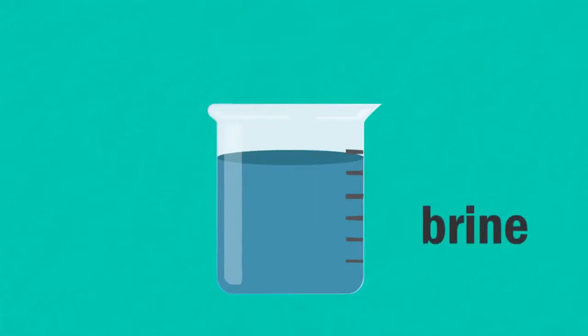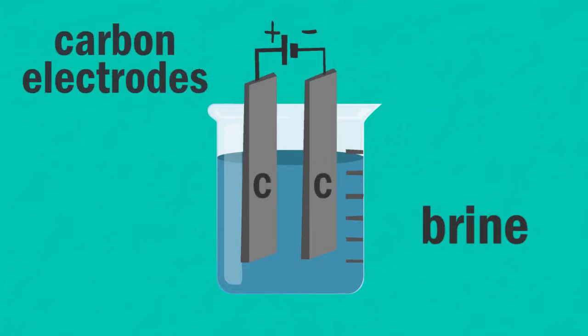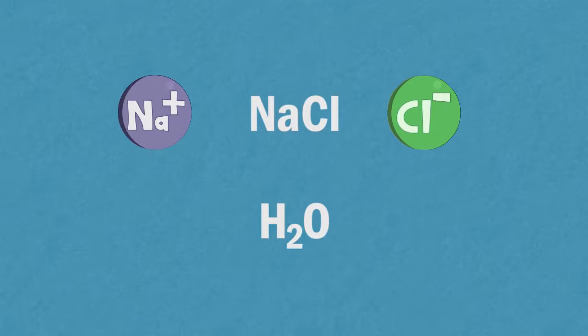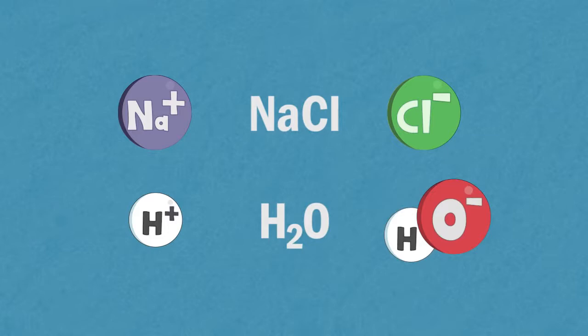Brine is a saturated solution of sodium chloride. We don't want the electrodes to become part of this reaction, and so we use carbon electrodes. From the sodium chloride we have positive sodium ions Na+, and negative chloride ions Cl-, and from the water we have positive hydrogen ions H+, and negative hydroxide ions OH-.